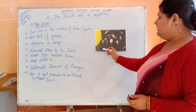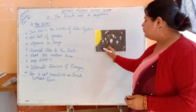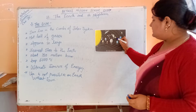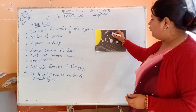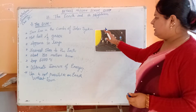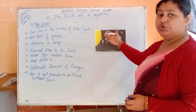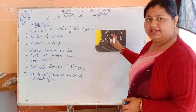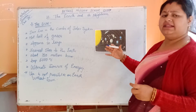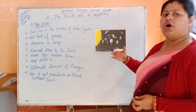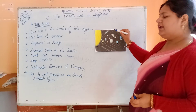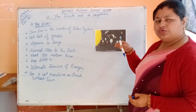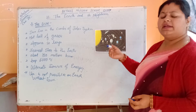Next is Saturn. Saturn also revolves around the sun on its own orbit. It will not jump its orbit and come onto the orbit of Jupiter. Saturn revolves around its own orbit without interfering with any other orbit.